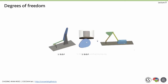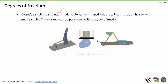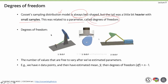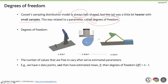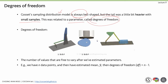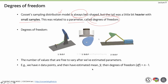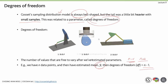To understand the t-test, we need to understand degrees of freedom. Gossett's sampling distribution, even with small sample size, is always bell-shaped, but the tails were a little heavier with small samples — related to the parameter called degrees of freedom. Degrees of freedom is a concept from mechanical engineering: the number of values that are free to vary. In statistics, it is the number of values free to vary after we've estimated parameters. If we have n data points and have estimated the mean y-bar, then knowing n minus 1 data points lets us determine the nth value.